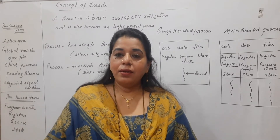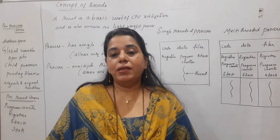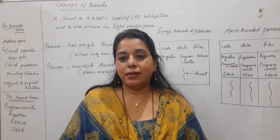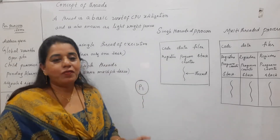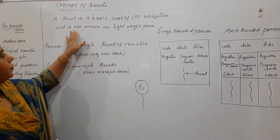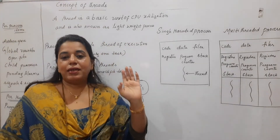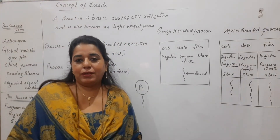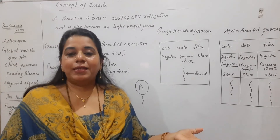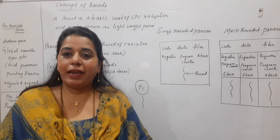So the very next concept you need to know is all about threads. So what is a thread? The formal definition for a thread is it is a basic unit of CPU utilization and it is known as a lightweight process. We say a process has heavyweight whereas a thread has lightweight.